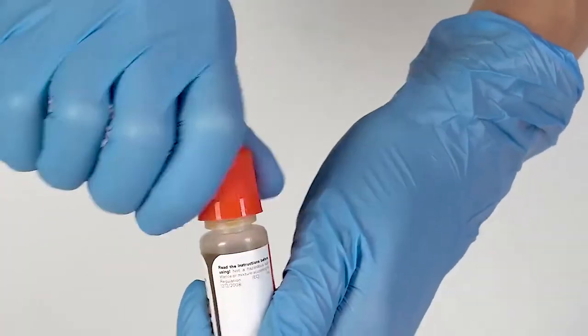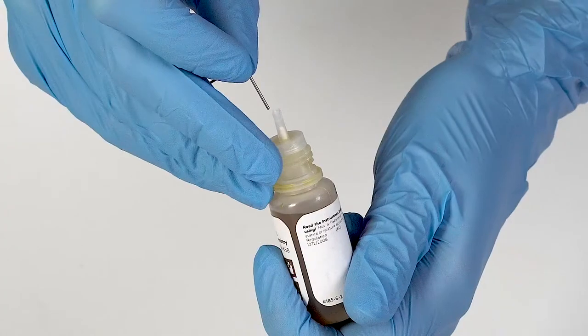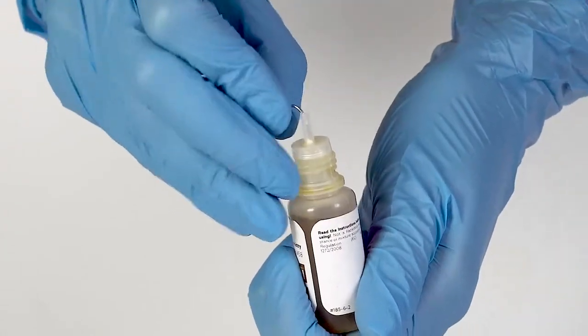To open a bottle containing a reagent, push the cap down and turn it. Pierce the bottle nozzle with an unbent paper clip.